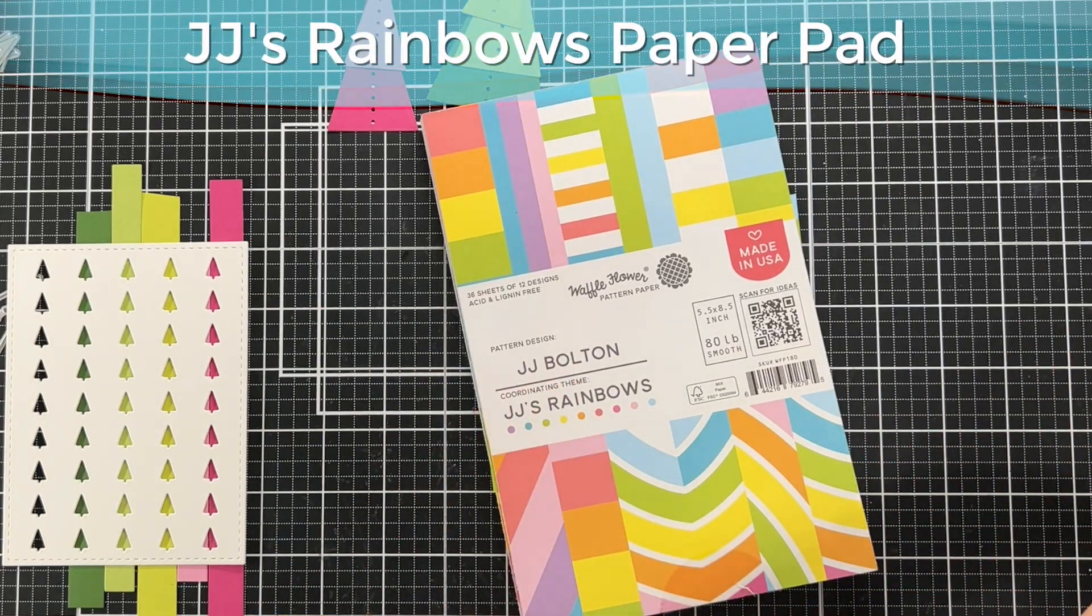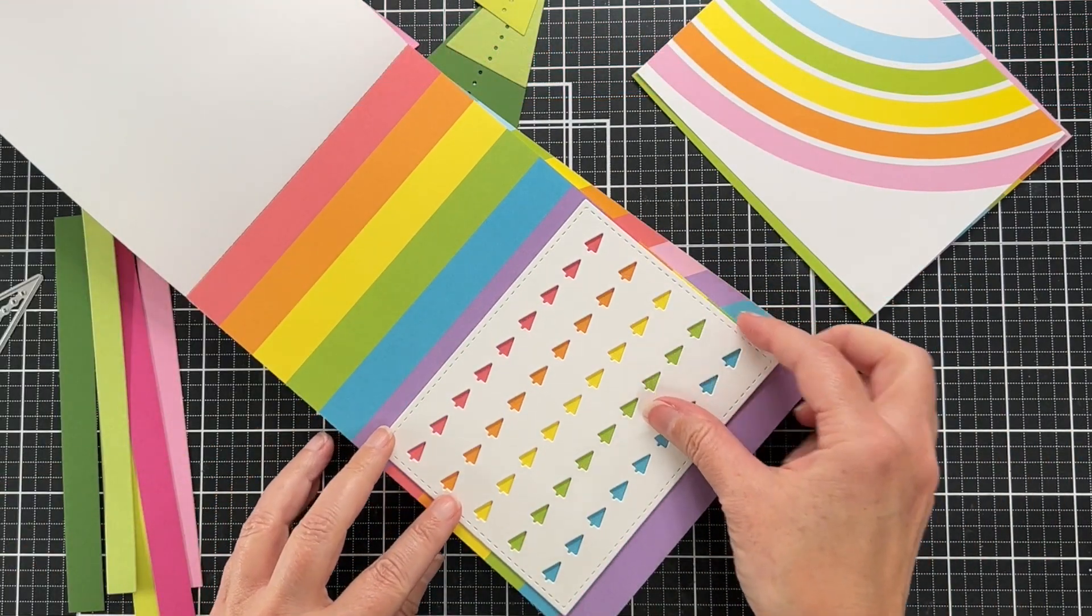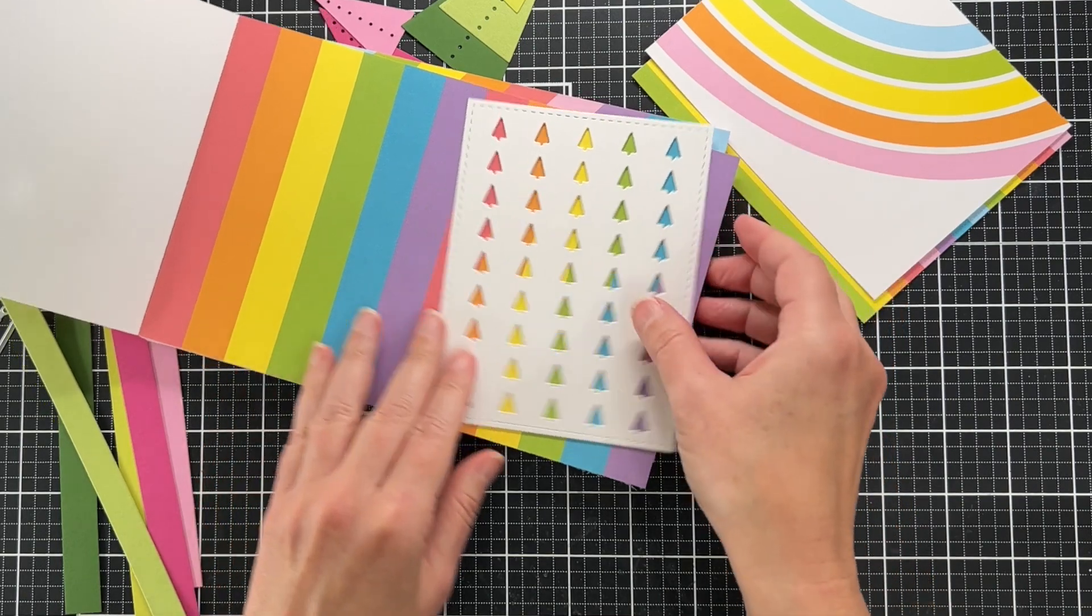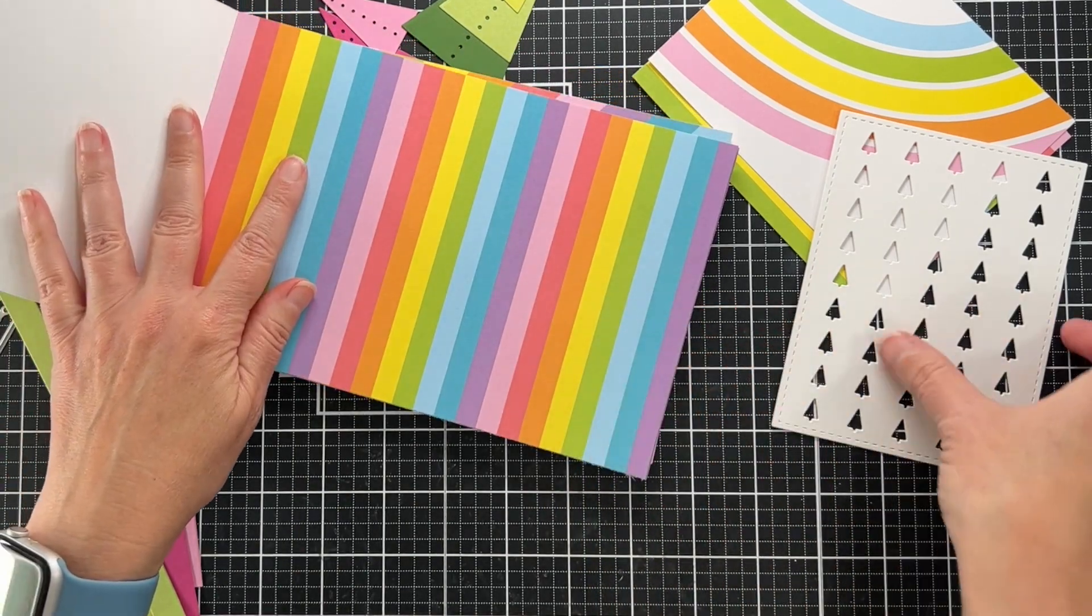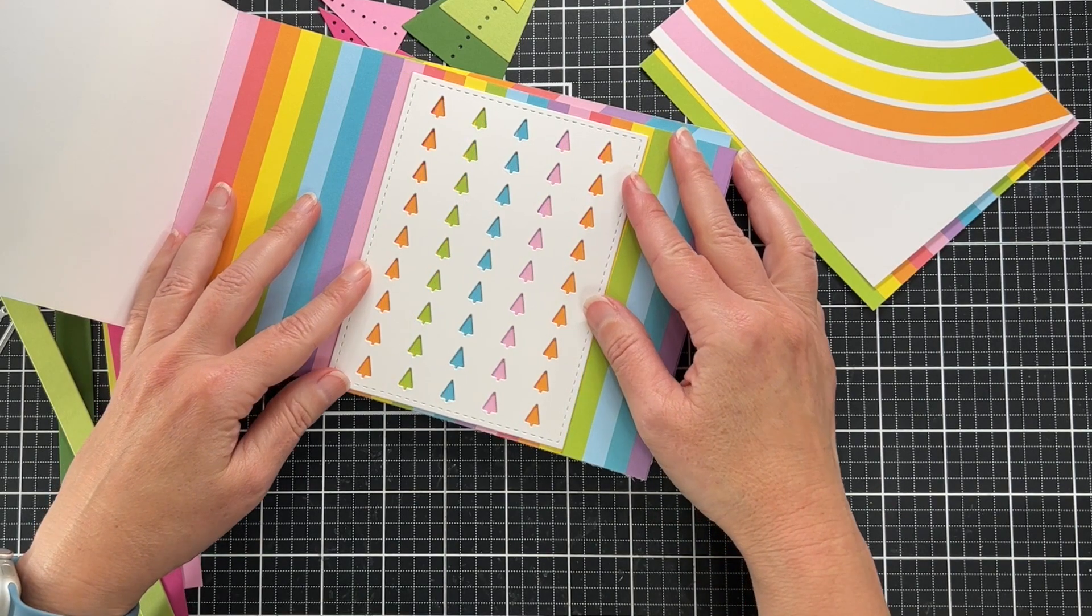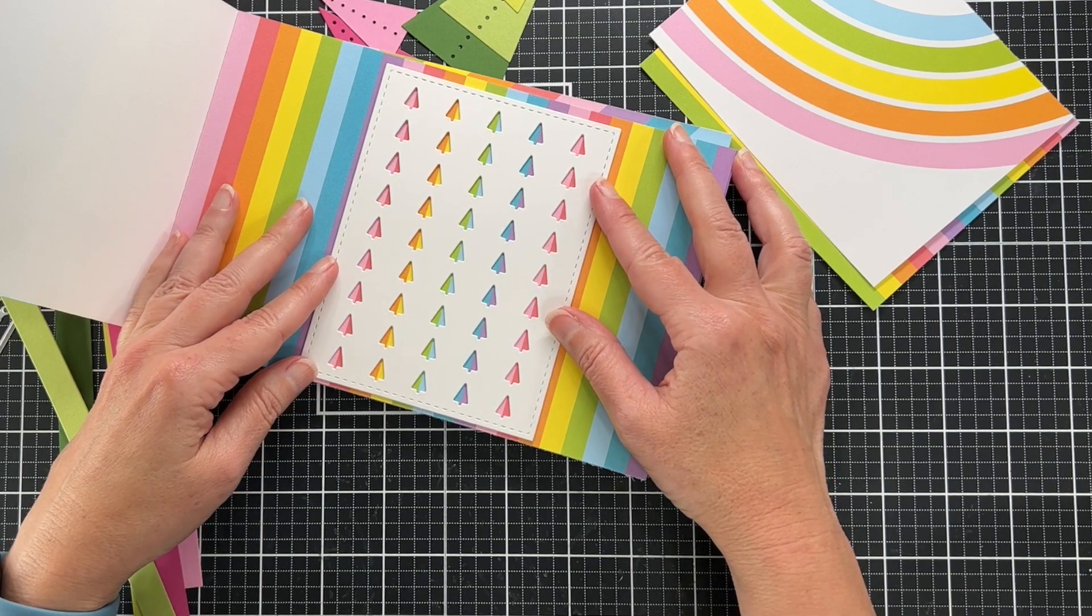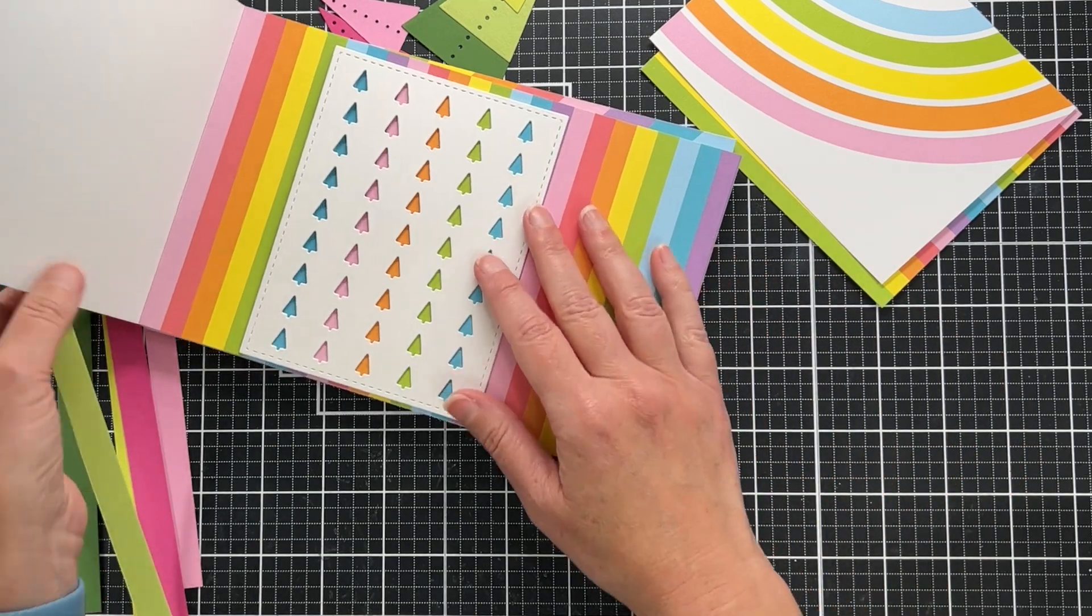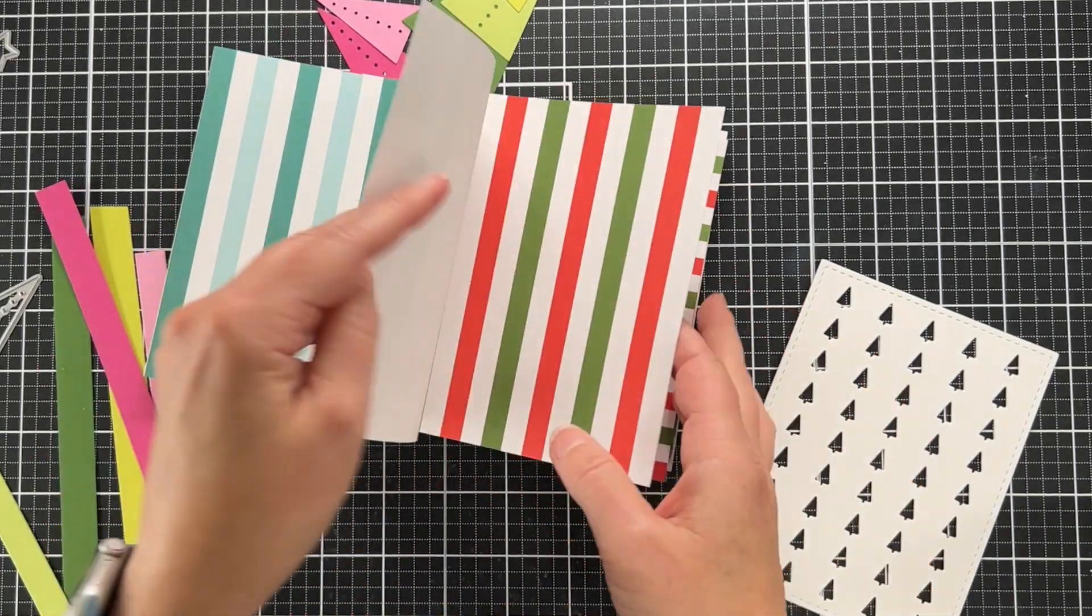I could have done something easier. If you have JJ's Rainbows paper pad, which is one of my favorite paper pads ever, you'll see that there's paper in this pad that lines up with this die and even this smaller stripe here. You can even get like a little duotone tree depending on how you shift the paper. Waffle Flower's other panel dies like this, like the stars panel, I think there's also a hearts panel just like this.